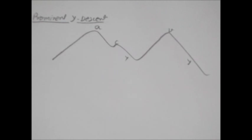Now let's talk about prominent Y descent. Prominent Y descent is seen in many conditions like constrictive pericarditis, severe right sided heart failure, atrial septal defect and tricuspid stenosis.